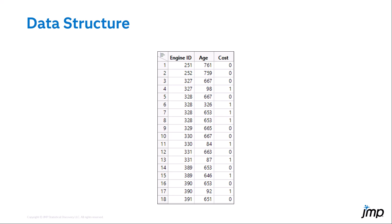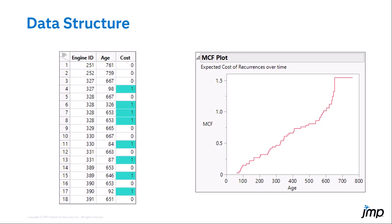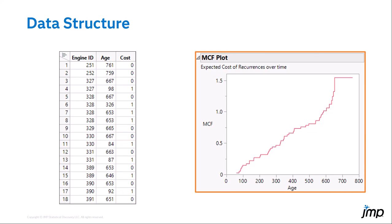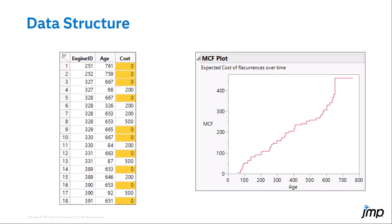The cost column can contain either count data or cost data. If counting events, the cost column will contain a one for each repair event and a zero for the end of service event — the MCF is then the mean cumulative count of events by age. If tallying costs, the cost column will contain the cost of the repair for each repair event and a zero for the end of service event — the MCF is then the mean cumulative cost by age.